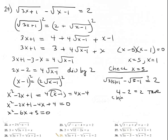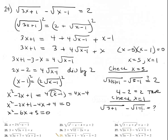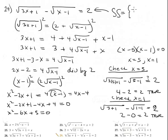Checking x equals 1: square root of 3 times 1 plus 1, minus square root of 1 minus 1, should equal 2. That's square root of 4 minus square root of 0, which is 2 minus 0 equals 2. True. Both solutions are valid. The solution set is {5, 1}.